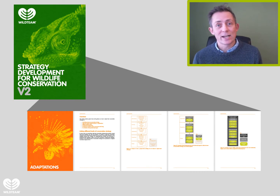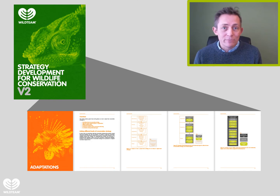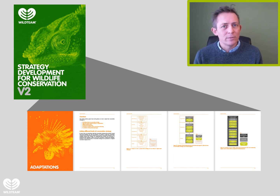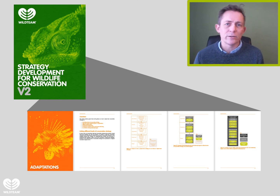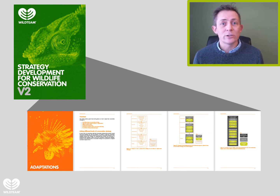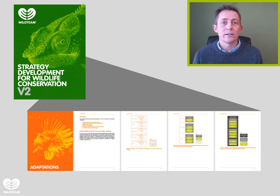The adaptation section is a catch-all section where the guidance covers common scenarios you'll encounter when creating a conservation strategy. For example, it tells you how to link different levels of conservation strategy — project level to programme level to organisational level. It also has guidance on how to incorporate commonly used terms such as human-wildlife conflict, climate change, ecosystem services, or human well-being. This section covers all of that.